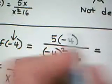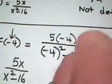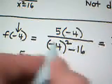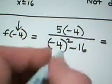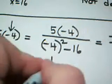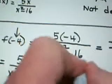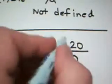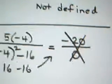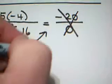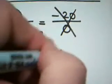5 times negative 4 is negative 20. Then on the bottom, we run into the same problem again that we had in the previous example. Negative 4 quantity squared is 16. 16 minus 16 is 0. Negative 20 divided by 0 is garbage. Now, the best way to say garbage in algebra talk is to say it's not defined.